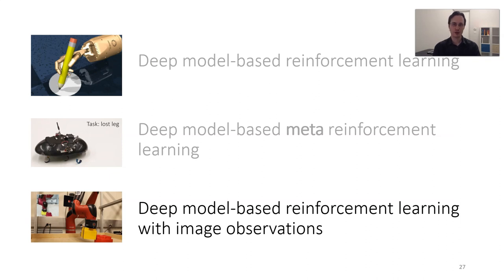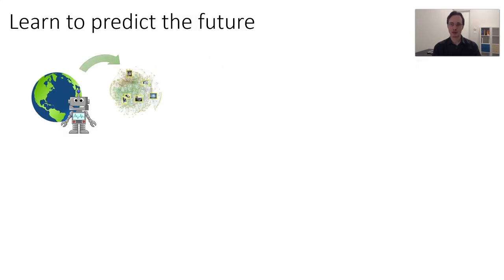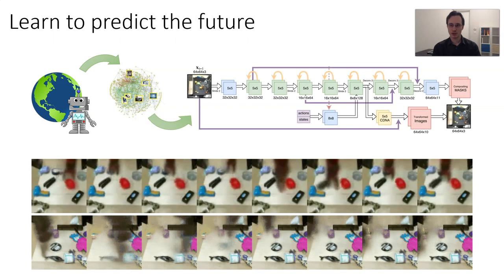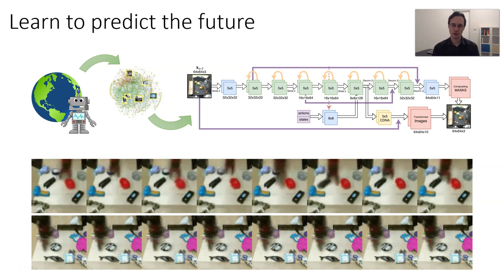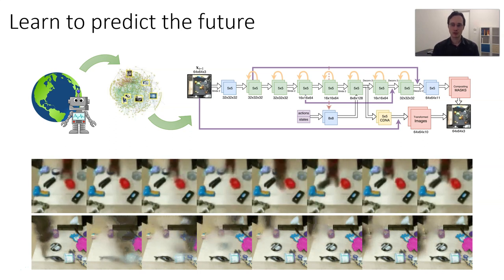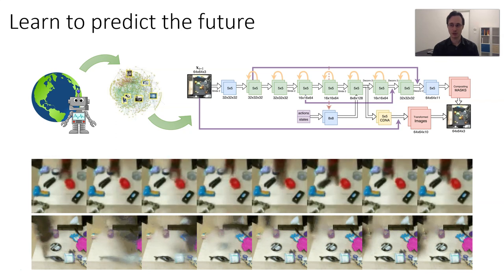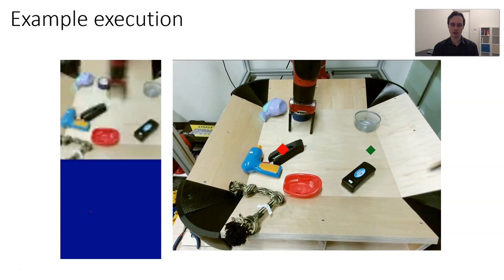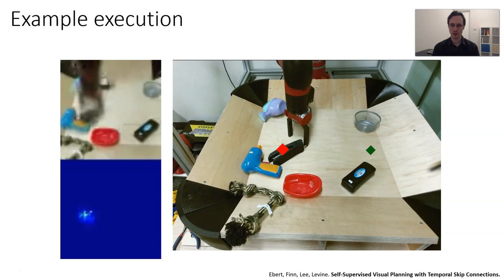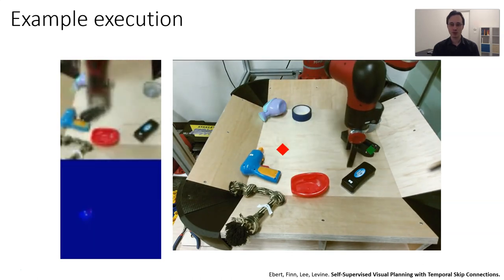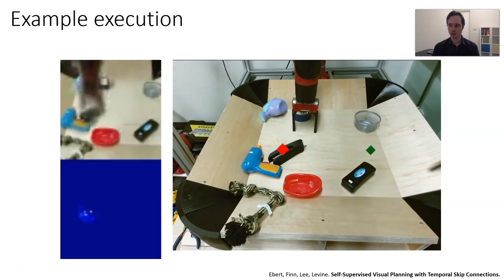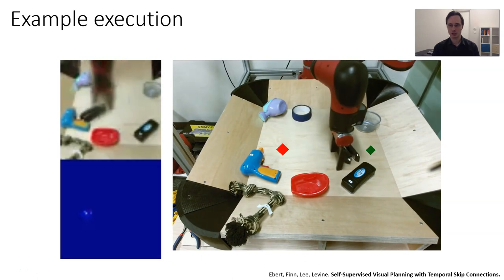Now, what about images? All the examples so far used low-dimensional state for model-based RL, but we can apply the same exact recipe to images. If you do model-based RL with images, you're learning to predict the future. Each row starts from the same initial image, but each column corresponds to a different set of actions, and the predictive model predicts images the robot might see if it does those actions, including manipulation of objects. We can give it a task by selecting a point in the image and telling the robot where that point needs to go, and the robot will plan the path. The basic recipe is exactly the same as before — MPC with the cross-entropy method for planning and a predictive model, which in this case just happens to predict images.